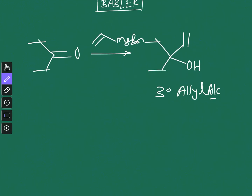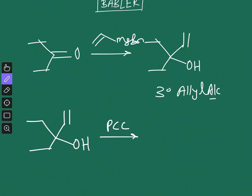What happens next is that the alcohol first forms a chromate ester with PCC. For simplicity we write CrO3 — this is basically a CrO3 complex with pyridine. It forms the chromate ester just as it would for normal alcohols.